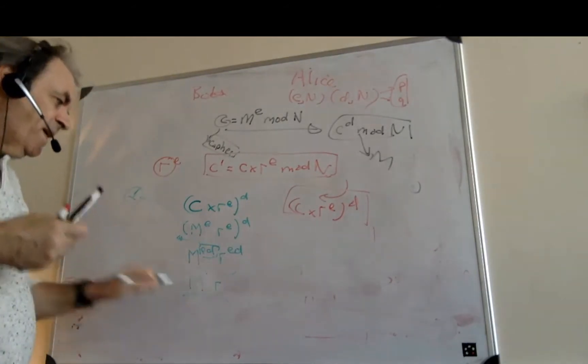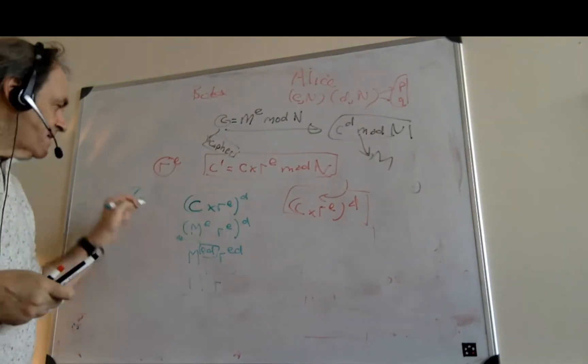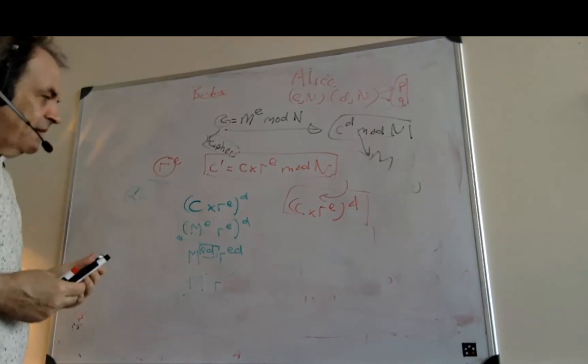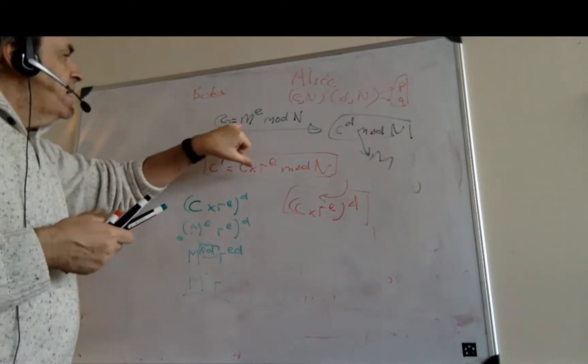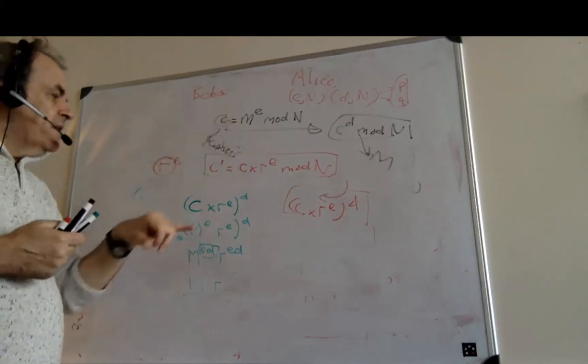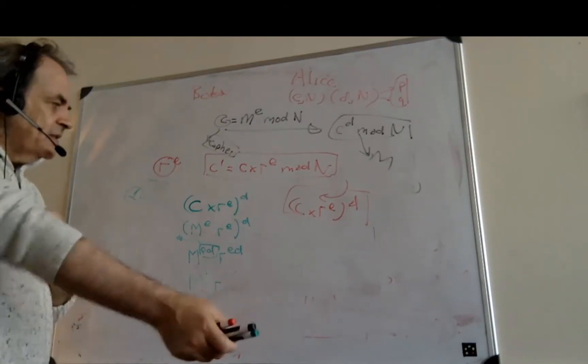So then all we have to do is to take the cipher that was sent back and divide by the value of R, and we now have the message. So in this way, Bob has determined what the message is without actually knowing what the decryption key actually is that Alice has used.